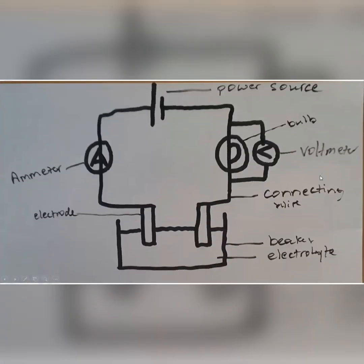For the apparatus setup: you have a power source, connecting wire with your ammeter in series, and your electrodes on either side. You also have connecting wire with a bulb or resistor, and your voltmeter going across that — remember, you measure voltage across a resistor, so voltmeters are not in series. Then your beaker with the electrolyte.